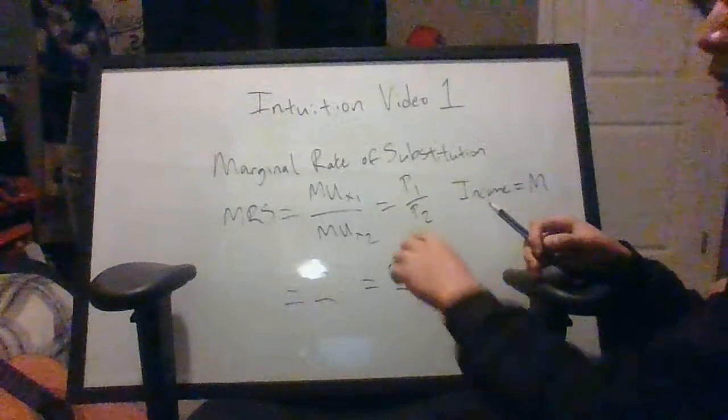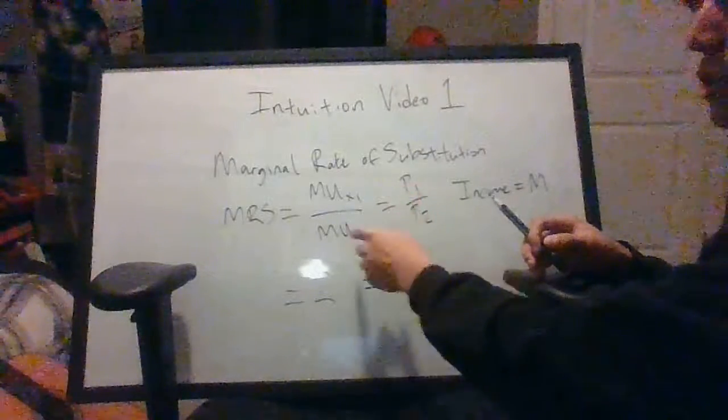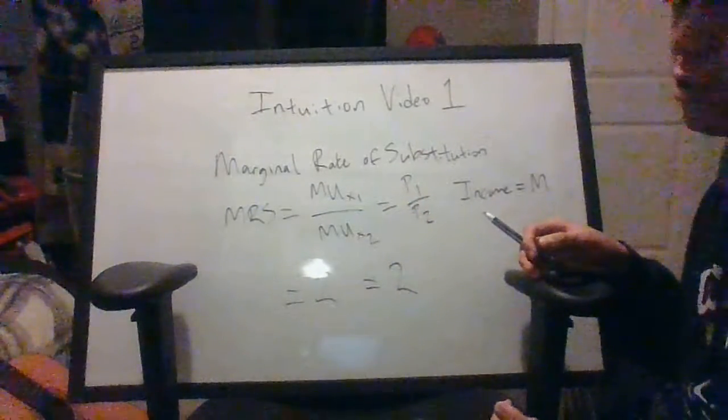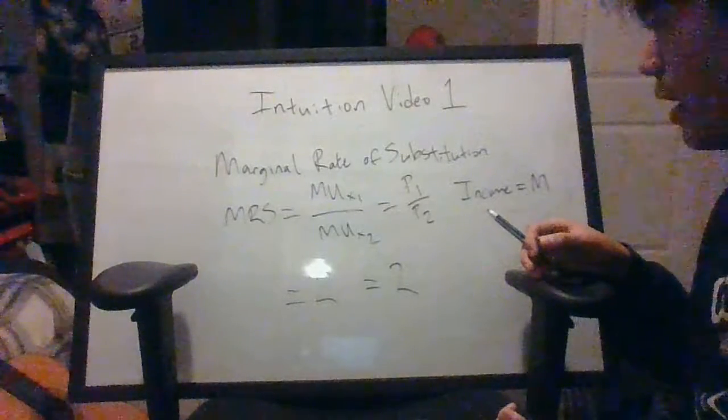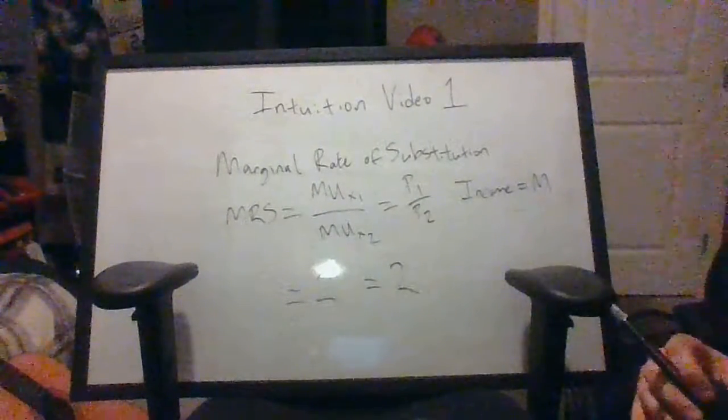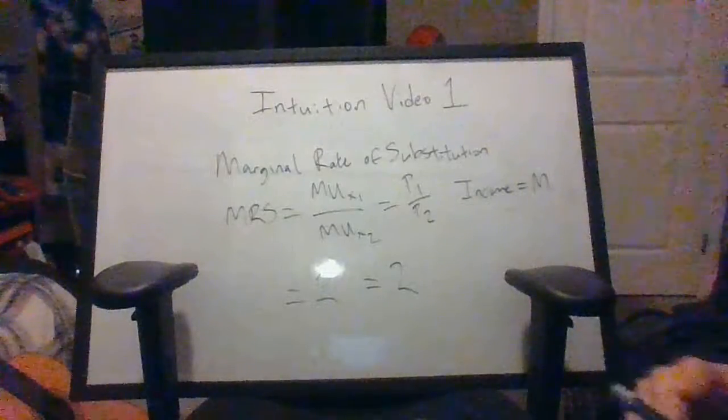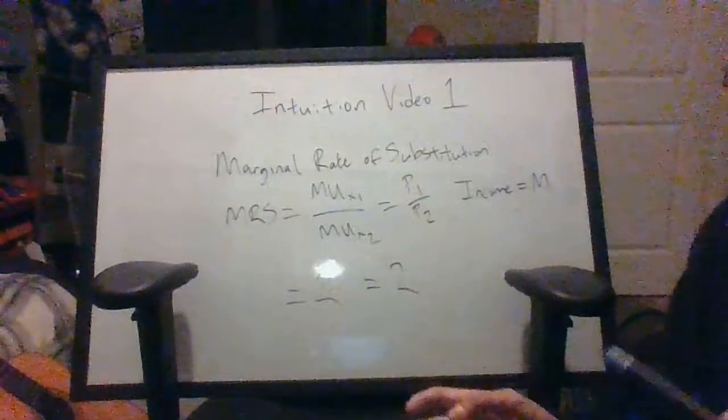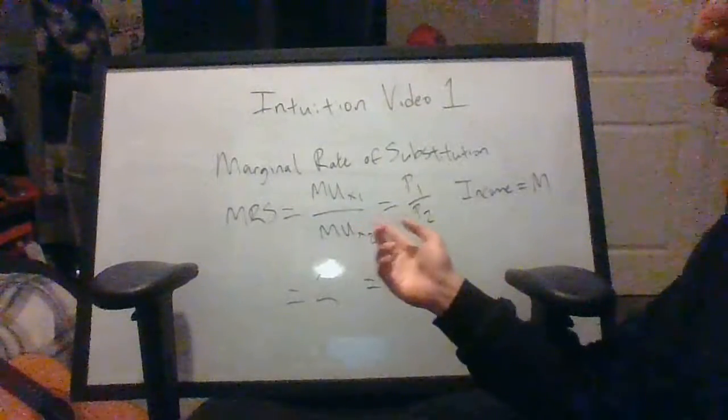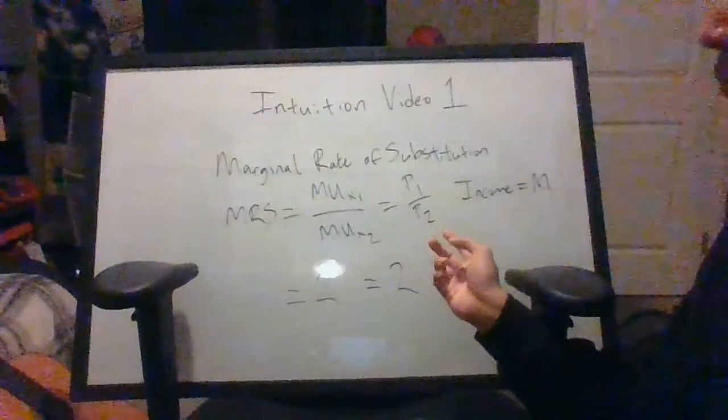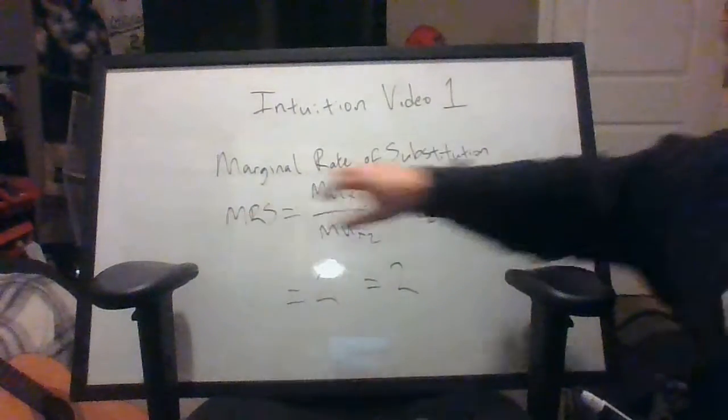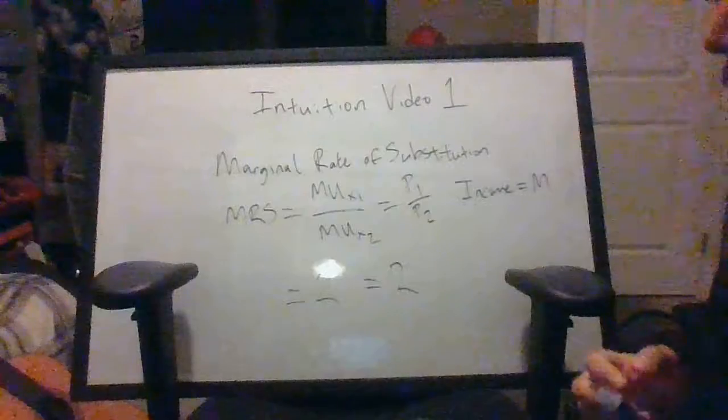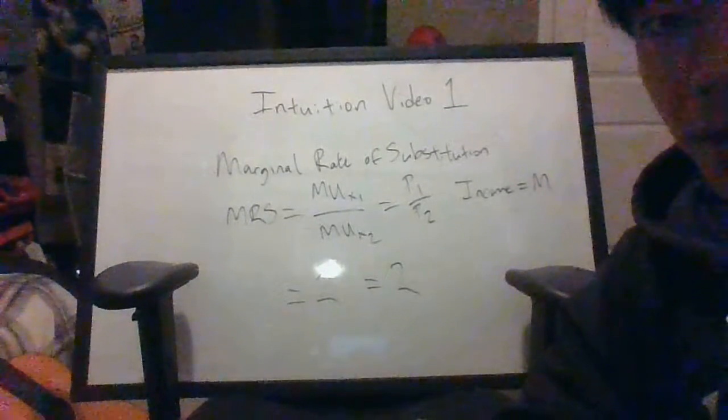And so that's kind of the intuition behind why we're setting our MRS equal to p1 over p2. And if you're looking for example problems, I have plenty of example problems on the channel, but this is solely to give you guys a quick introduction as to why we are interested in setting our MRS equal to our price ratio, and I think the decomposition of MRS into these two marginal utilities makes it a little bit easier to see visually.